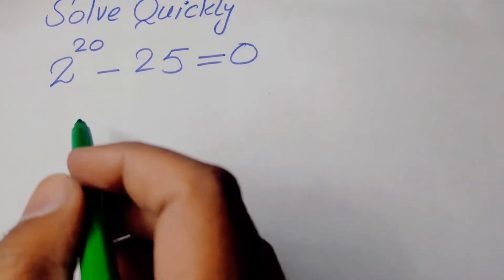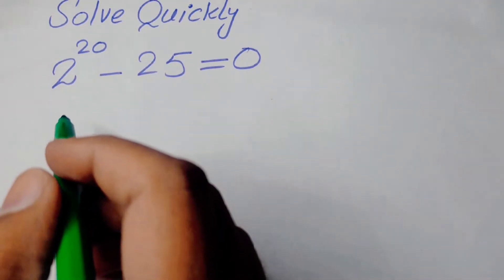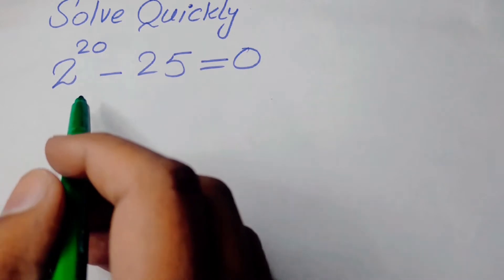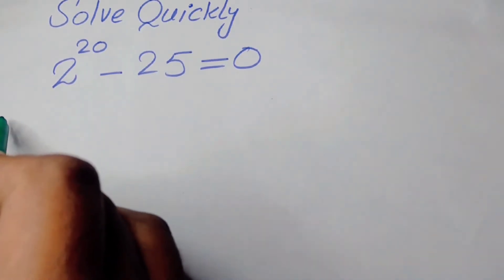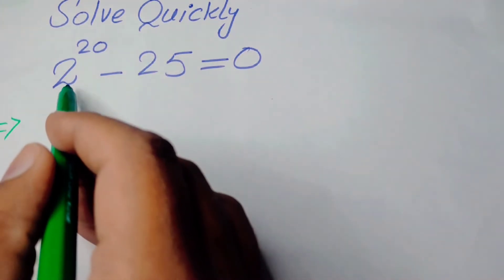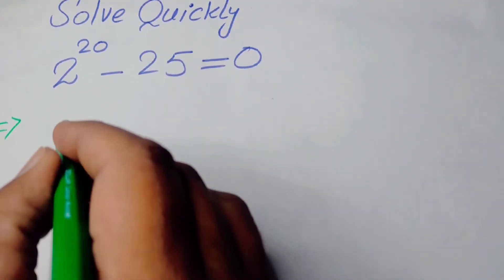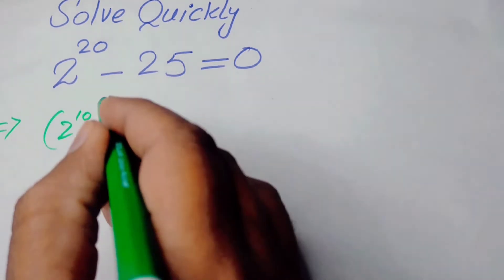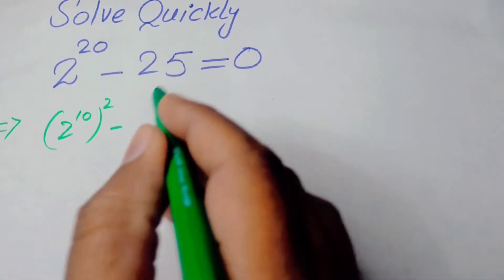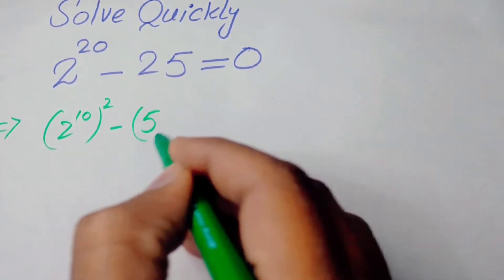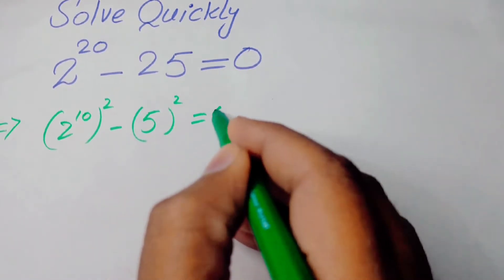Hello everyone, welcome back to the Map of Mathematics. In this video we are going to solve this algebraic expression. The very first step is to write 2 to the power of 20 as 2 to the power of 10, whole squared, minus 25 written as 5 squared, equal to 0.